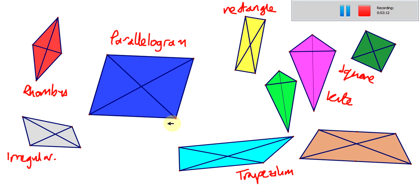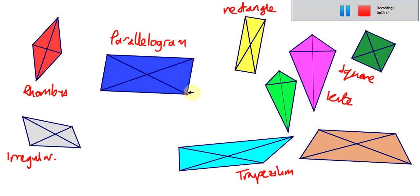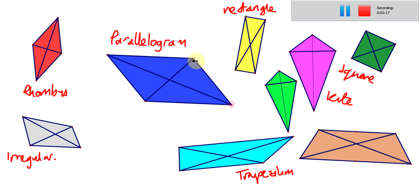And it doesn't matter which way round they are, or what you do with them, they're always crossing there. So those are the diagonals. And if you don't know what the diagonals are, hopefully you do now. Whichever way round it is, that's what they look like.